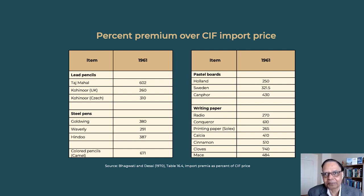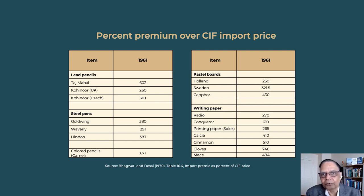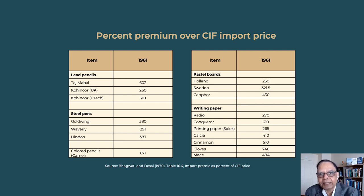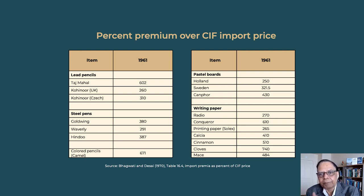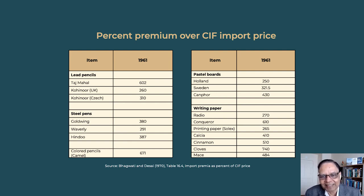The import licenses themselves were classified into different categories. There were 'established importers,' who could import and then sell to others. There were 'actual user' licenses, issued only to the actual users — largely for raw materials and intermediate inputs. There was a separate 'capital goods' category, also issued only to actual users — no established importer could get a license there. If you were starting a new enterprise, the industrial licensing authority would not give you an industrial license unless you first had clearance from the capital goods committee of the CCI&E — connecting industrial licensing to import licensing.